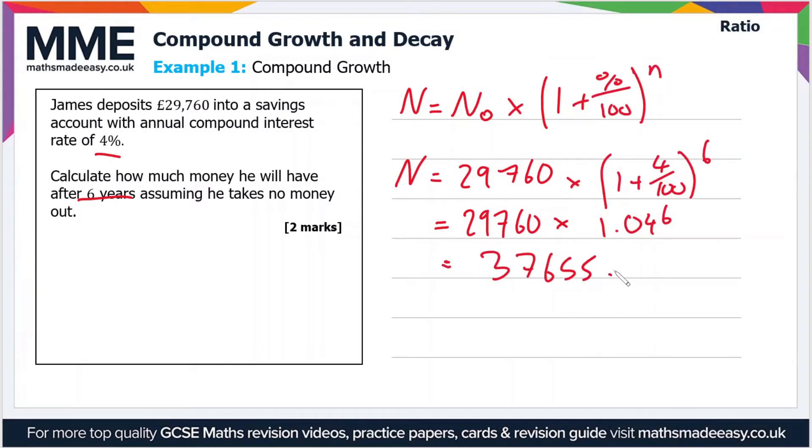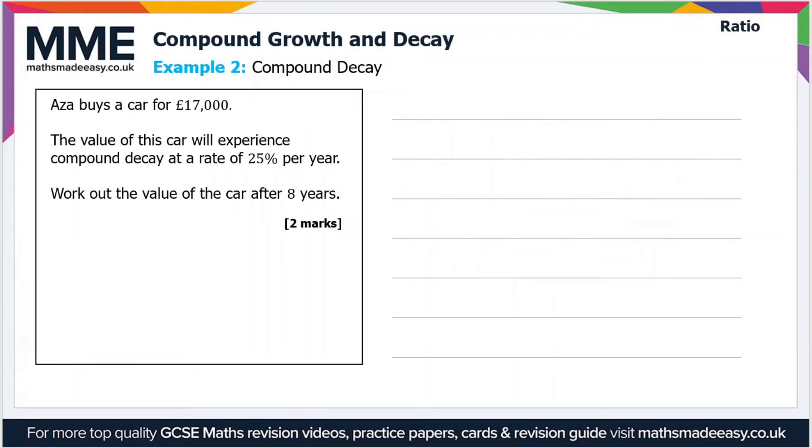Moving on to the second example then. Azer buys a car for £17,000. The value of this car will experience compound decay at a rate of 25% per year. Work out the value of the car after eight years.